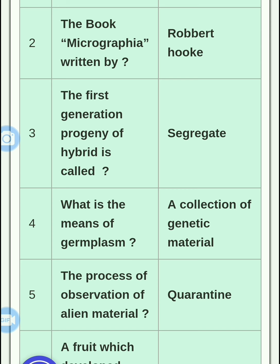Fourth question: what is the meaning of germplasm? Germplasm means a collection of genetic material, which includes any kind of genetic material like seed, DNA, pollen, or any kind of plant parts like tuber, bulb, or corn.